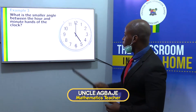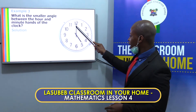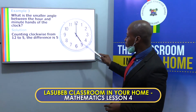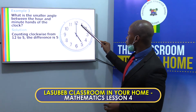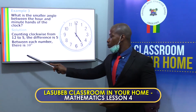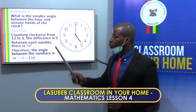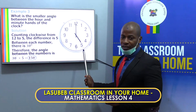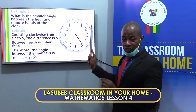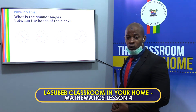One final example: what is the smaller angle between the hour and the minute hand of the clock? This is the hour hand and this is the minute hand. We are interested in the smaller angle. We go from here: 1, 2, 3, 4, 5. There are 5 spaces, and that is 30 degrees multiplied by 5 — you will get 150 degrees. Important thing to note: when doing a question of this kind, do not subtract the smaller number from the bigger number, as it doesn't always work. The best approach is to count physically and multiply.